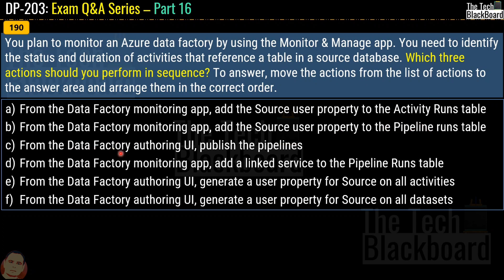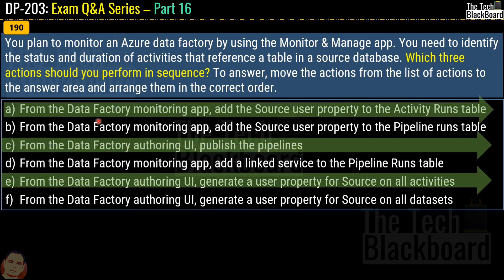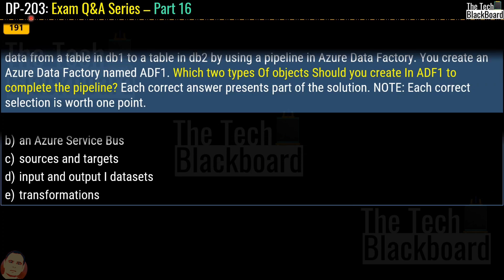Note that you must not only identify the correct actions but also list them in the correct order. The correct answer is options A, C, and E. The correct sequence is: first option E — generate a user property for the source on all datasets in the authoring UI; second option A — add the source user property to the activity run table in the monitoring app; third option C — publish the pipelines from the authoring UI.